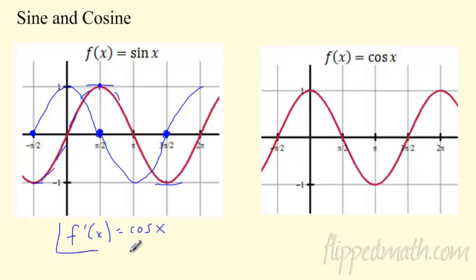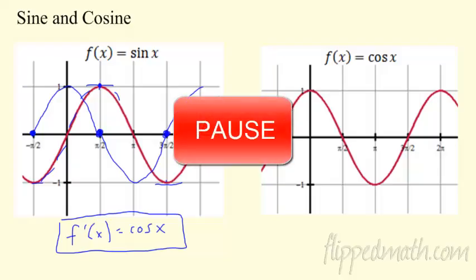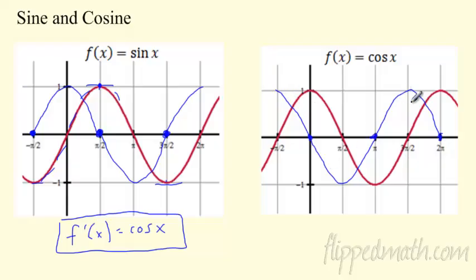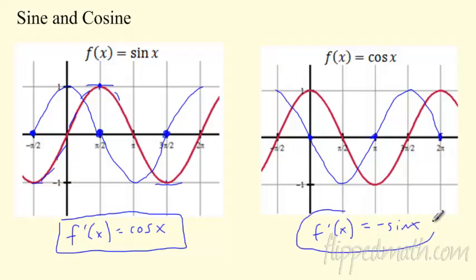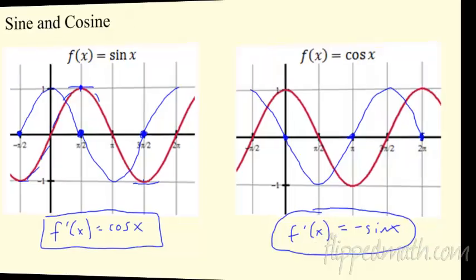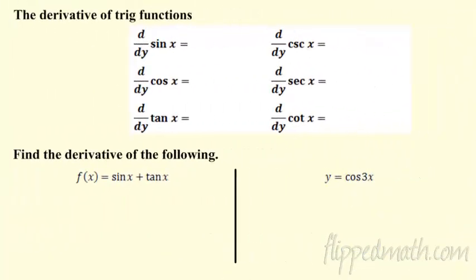We can do a more formal algebraic proof, but the derivative of sine is cosine. Go ahead and pause it and try to find the derivative of cosine by graphing it. Did your graph look like this? Hopefully you came up with this graph. The derivative looks like a sine curve, but careful — it's starting in the negative direction, so it's actually the negative sine of x. If you came up with that, you are a boss. The derivative of cosine is negative sine.